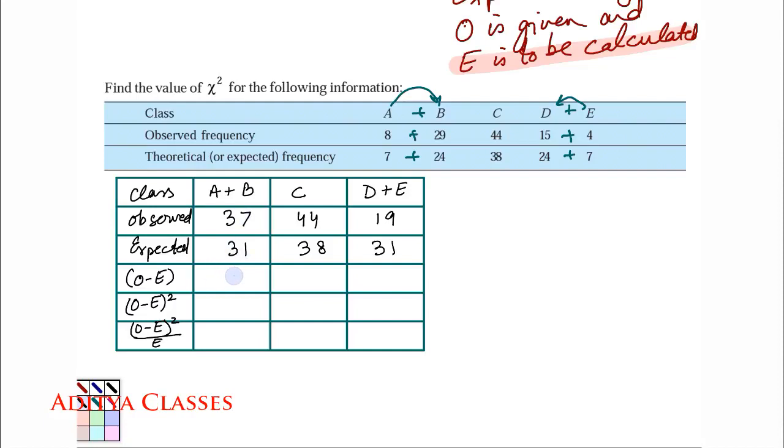So what will be O minus E? It will be in this case A plus B combined. So now they are not separate for me. They are AB. This is DE. So O minus E, observed and expected. O minus E is 6. 44 minus 38 is again 6. 19 minus 31 will give me a minus 12.